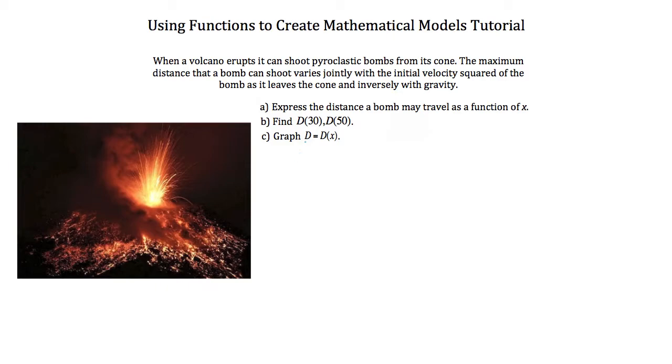Question A is to express the distance a bomb may travel as a function of x. So we're going to write our function, and we're calculating distance here, so I'm going to call our function D(x). We were told that the maximum distance varies jointly with the initial velocity squared. So I'm going to make our initial velocity our x value, so our velocity squared varies jointly with our distance, and inversely with gravity. I'll just write g for gravity. Usually in physics, they use 9.81 meters per second squared for gravity.